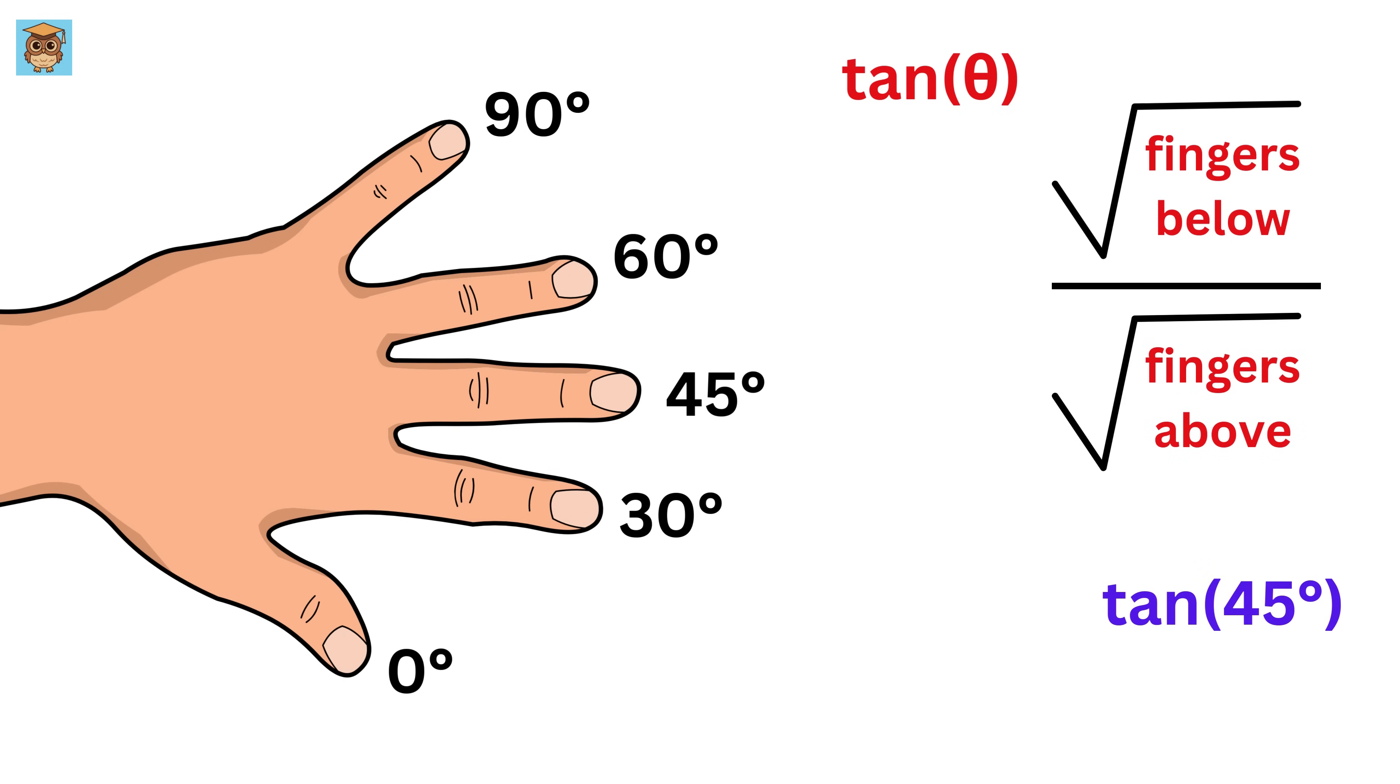Let us look at tan 45 degrees. This is 45 degrees. Fingers below are this and this, so 2, and thus write square root of 2 here. Then, fingers above are this and this, which is also 2, and thus write square root of 2 in the denominator. Thus, the answer for tan 45 degrees is simply 1.